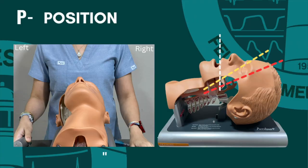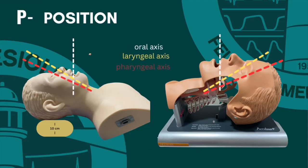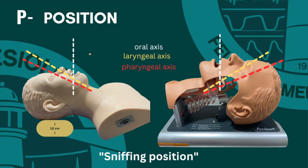After checking your equipment, stand behind the mannequin with the head in the sniffing position. A successful intubation involves proper positioning to align the axes for visualization. The oral axis is where we view the mouth, the laryngeal axis is where the glottis lies, and the intervening pharyngeal axis connects them. All three axes must be aligned in order to view the glottic opening.